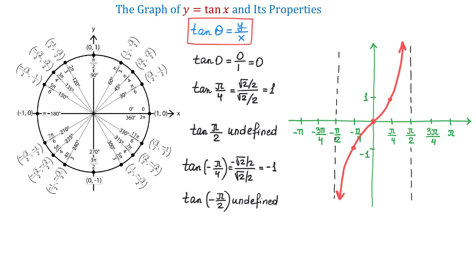What we have here is the graph of the tangent function over one period. Because the distance from negative pi over 2 to positive pi over 2 is pi, the period of the tangent function is pi. Then, to the right and to the left of these vertical asymptotes, this graph will repeat itself. To the right, we will have more vertical asymptotes at 3 pi over 2, 5 pi over 2, and so on. To the left, the next asymptote will be at negative 3 pi over 2, then negative pi over 2, and so on. This graph representing the tangent function will continue to the left and to the right indefinitely. I will complete this graph over a few more periods, and then we will talk about the properties.